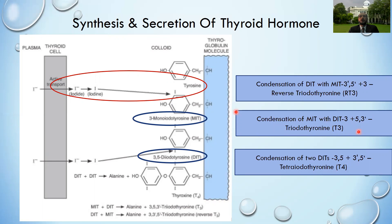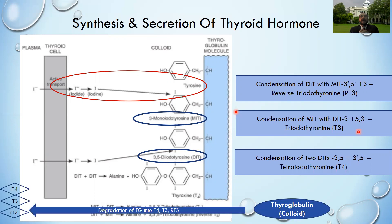These thyroid hormones, when formed, are stored in the colloid as thyroglobulin. Whenever there is a need, the thyroglobulin or colloid is internalized by endocytosis, and by lysosomal degradation within the thyrocyte they are converted to T4, T3, and reverse T3, and are secreted into the circulation to be taken to the areas where they exert their effect.